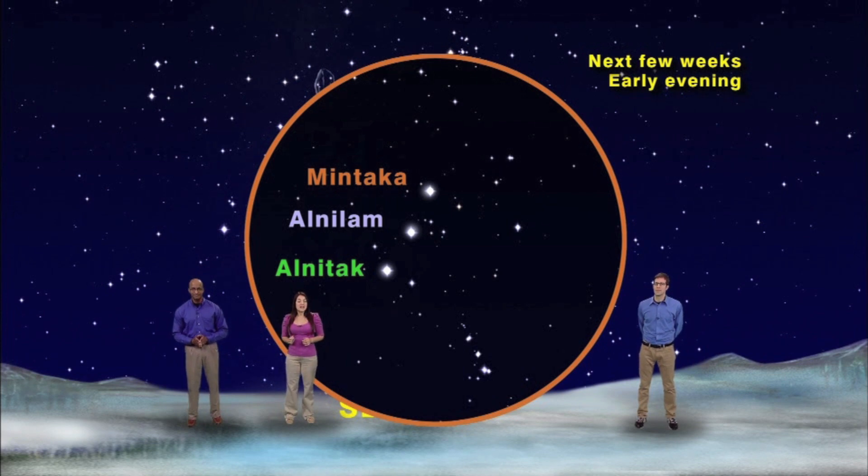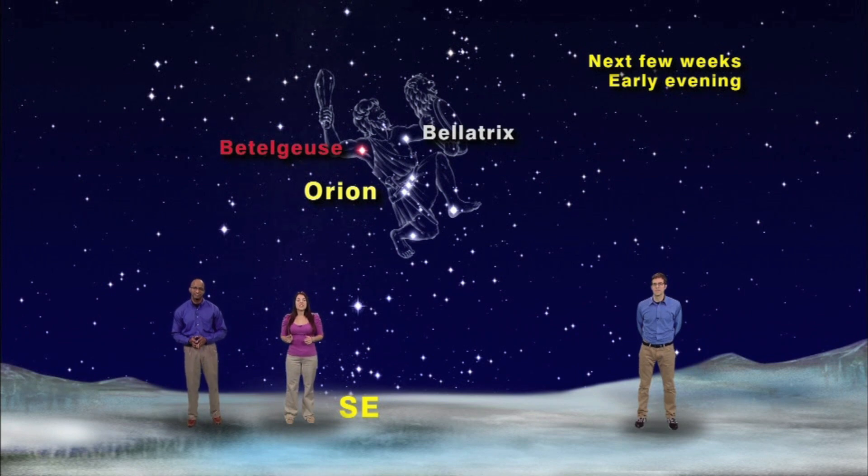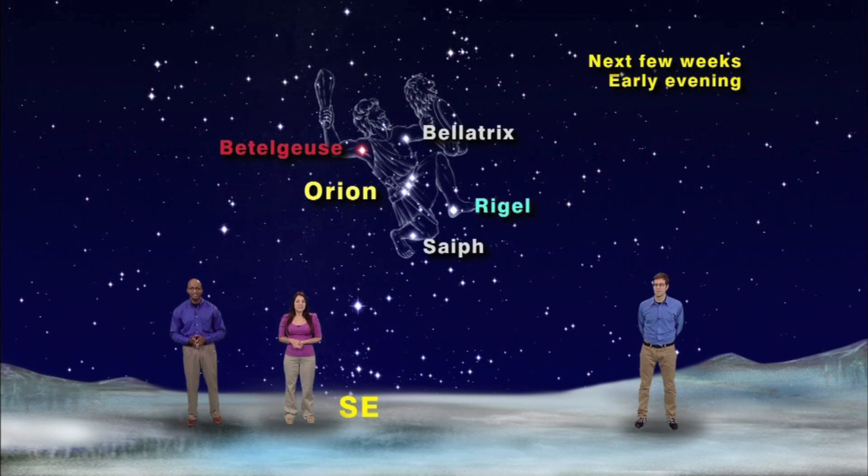These are the stars Alnitak, Alnilam, and Mintaka. Above these three belt stars, you will see two brilliant stars marking Orion's shoulders, Betelgeuse and Bellatrix. And below his belt, two brilliant stars mark his ankle and his knee, Rigel and Saiph. And although we talk about his bright stars every winter,